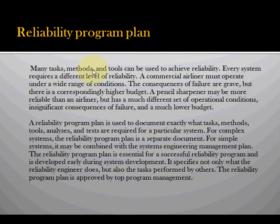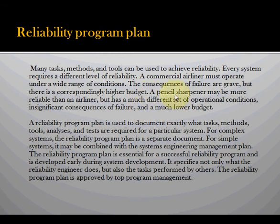There are a lot of tasks, methods, and tools that can be used to achieve reliability. Each system requires a different level of reliability. Commercial airliners must undertake a wide range of conditions — environmental conditions — and consequences of failures are extremely grave. A pencil sharpener may be more reliable than an airliner.